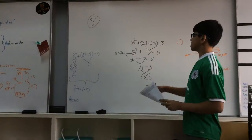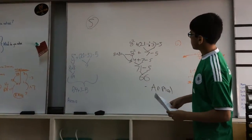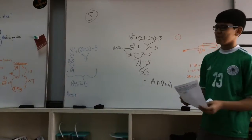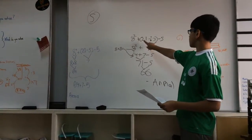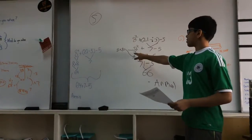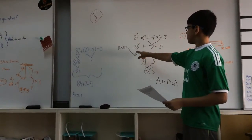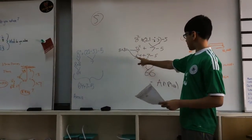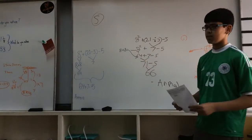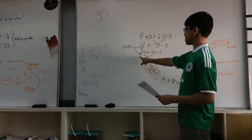So first, the question says we're supposed to solve the parentheses first according to PEMDAS. So I solved that in the brackets and got 7, so I rewrote it. And then 8 — you're supposed to do the exponents next, so 8 times 8 would equal 64.